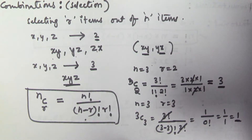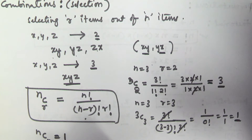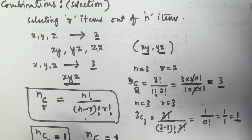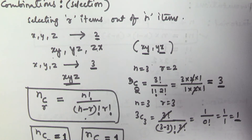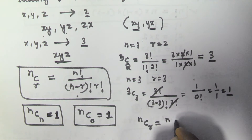This is what combinations are about. There are certain properties. When selecting n items out of n items, the value nCn equals 1. When selecting 0 items out of n items, nC0 also equals 1. Another property is that nCr is always equal to nC(n minus r).